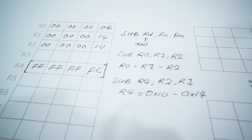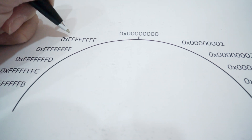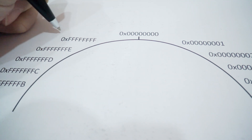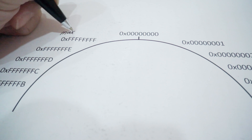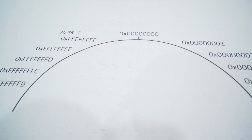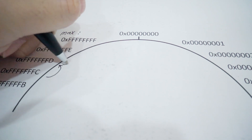However, the value doesn't mean it is a negative number. In general, a processor doesn't care whether the value is positive or negative — it is our job to interpret the result of the operation correctly. Please take note that these are the limits of the maximum numbers a 32-bit register can hold. So if we add 4 to R4 now, it will get back the value of 0.